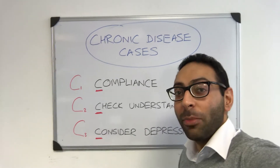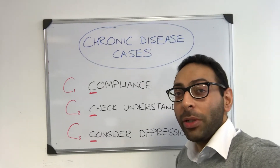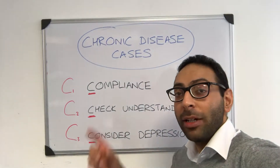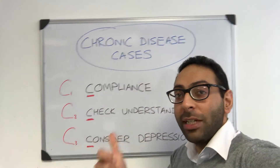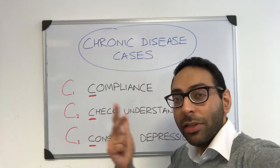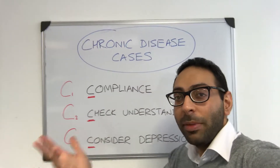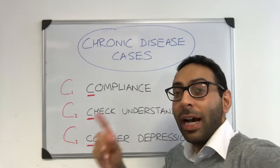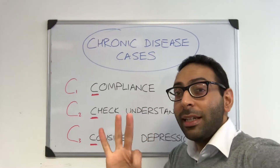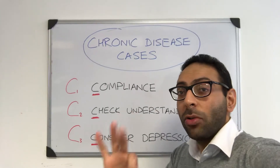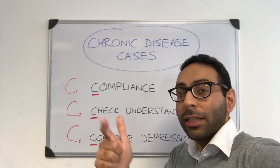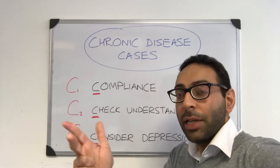Hi guys, in the office all day doing mock CSAs. I thought I'd do a quick video about chronic disease cases — things like hypertension, hypothyroidism, diabetes, COPD, etc. Think about the three C's in your data gathering. Of course, still think about red flags, psychosocial, ICE, etc.